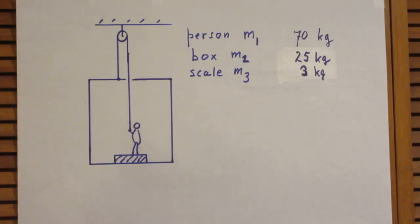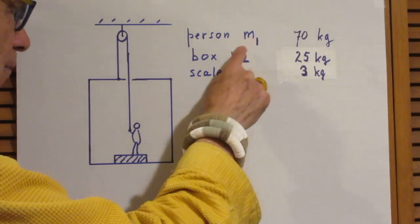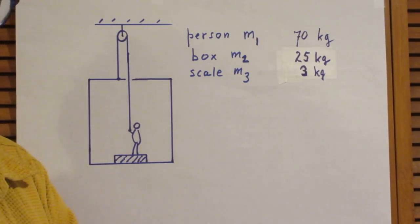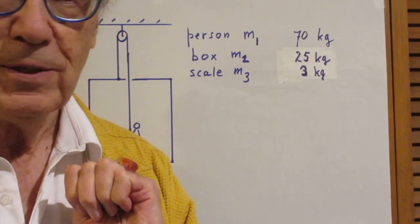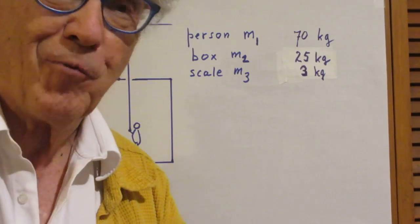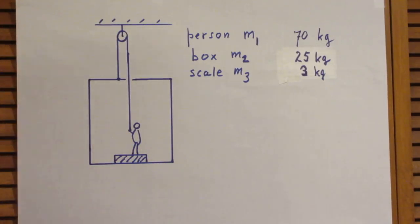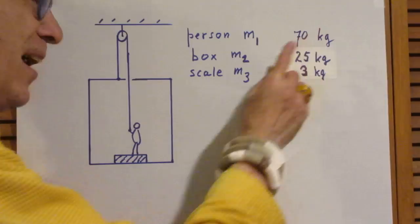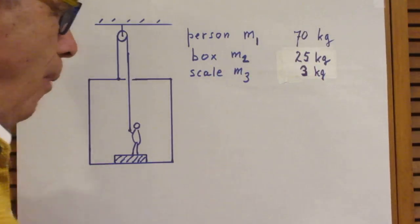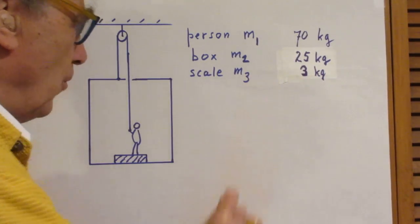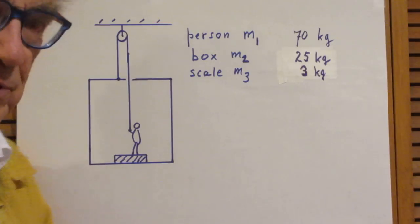Once you've done that, it's always interesting to put in some numbers to get a better feeling for it. So I suggest that the person weighs 70 kilograms—it's the mass, I should say. The mass of the person is 70 kilograms, the mass of the box is 25 kilograms, and the mass of the scale is 3 kilograms.